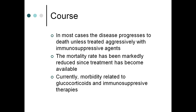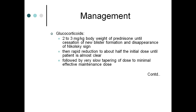Regarding disease course, pemphigus progresses to death unless treated aggressively with immunosuppressive agents. Mortality has been markedly reduced since treatment became available, though morbidity related to glucocorticoids and immunosuppressive therapy is now a concern. Management: glucocorticoids are first-line, given at high dose 2–3 mg/kg body weight until new blister formation ceases and Nikolsky sign disappears, then rapidly reduced to about half the initial dose.